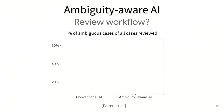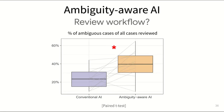Let's look at the results. When we look at which cases experts decided to focus on within that limited time they were given, we see that experts reviewed significantly fewer ambiguous cases when using the conventional AI compared to the ambiguity-aware one. This result highlights that case ambiguity, when it is communicated, can be a relevant property for experts to prioritize which AI suggestions to review first.